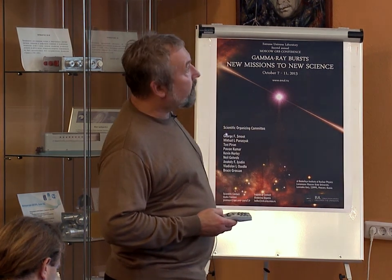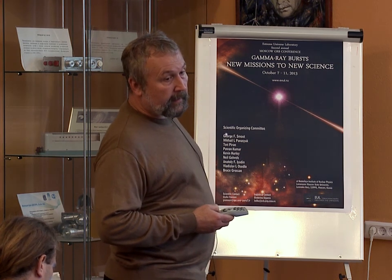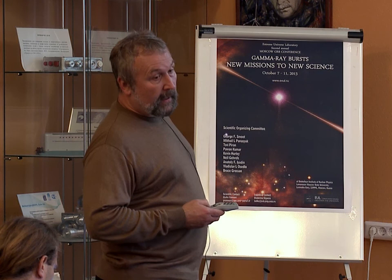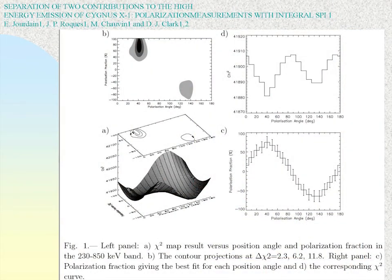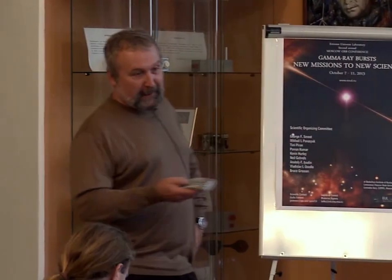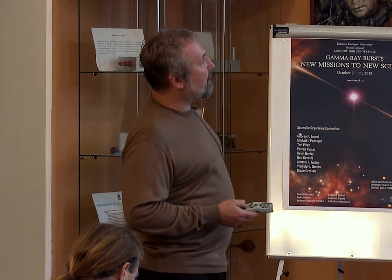A question is raised that for Cygnus X-1, the high polarization may be explained by jet presence. The speaker notes that the article from which the picture was taken does not mention jets, but acknowledges it is possible. This is noted as interesting because it would be similar to active galactic nuclei jets, which will be discussed later.